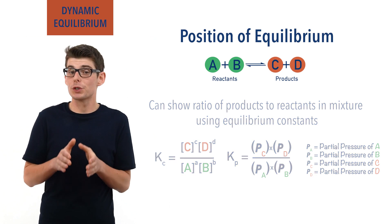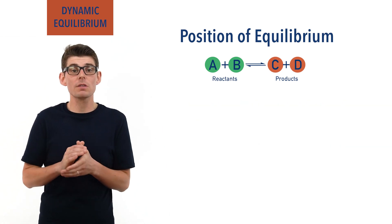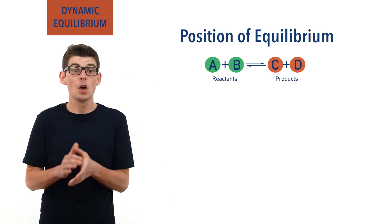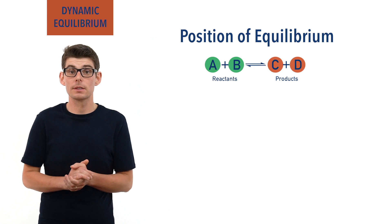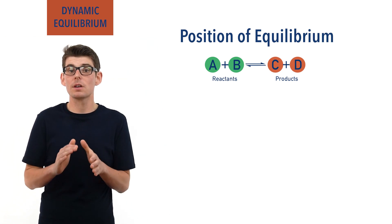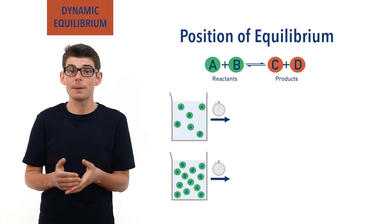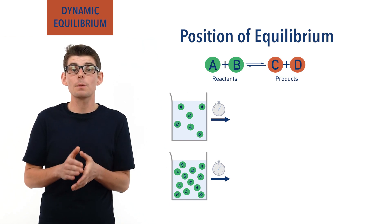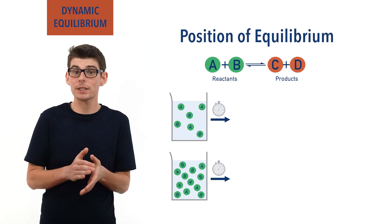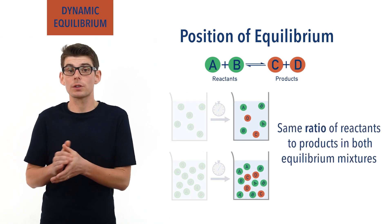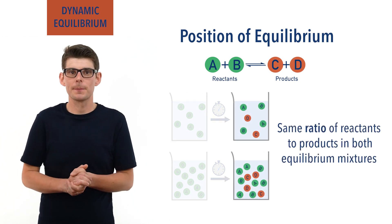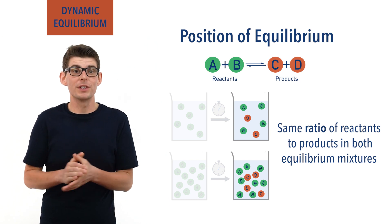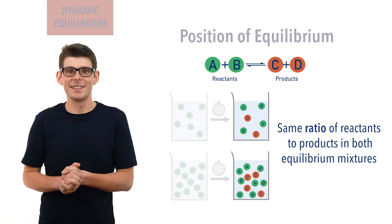It is really important to understand that positions of equilibrium aren't based on the starting concentrations or masses of reactants. Regardless of the starting amounts after enough time, a particular reaction in a closed system will end up with the same ratio of reacting concentrations to product concentrations, if the conditions are the same. Again this idea is outlined in a bit more detail with the video on the equilibrium constant Kc.